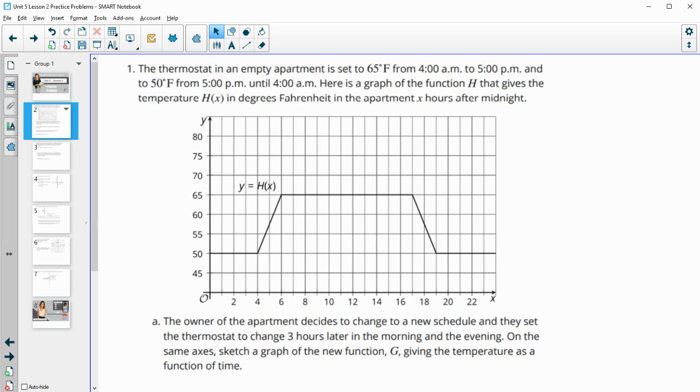Number one gives us a graph of the thermostat settings of an empty apartment. It's at 65 degrees from 4 a.m. to 5 p.m., so this middle chunk.